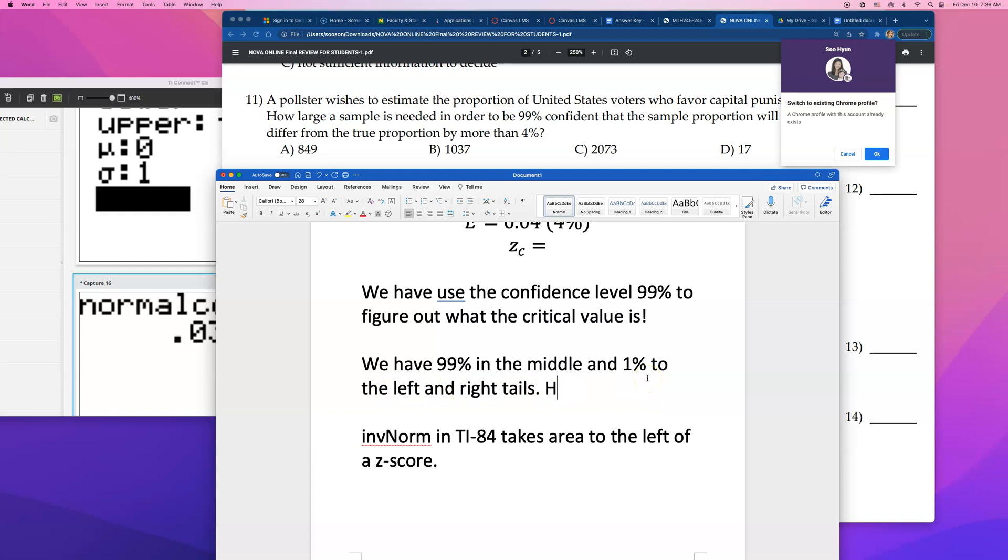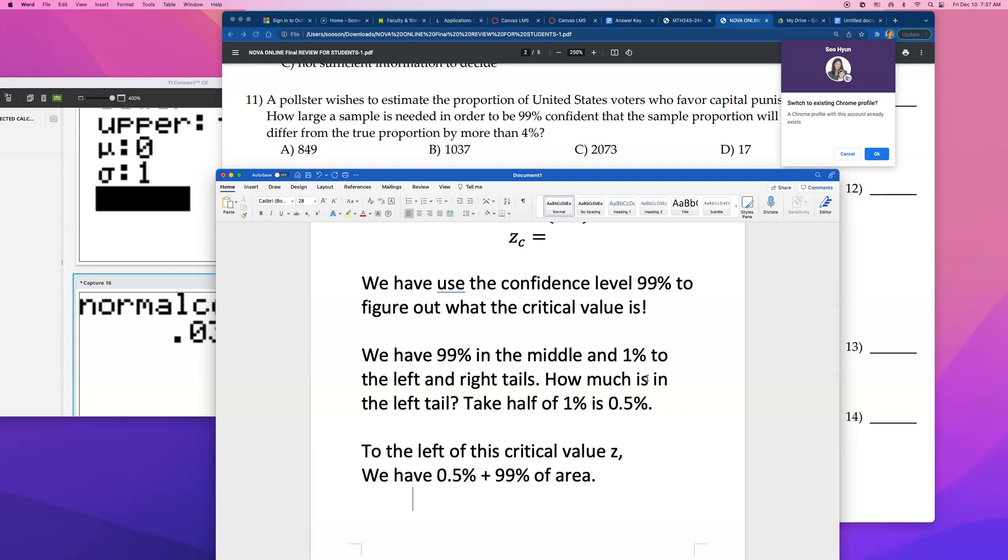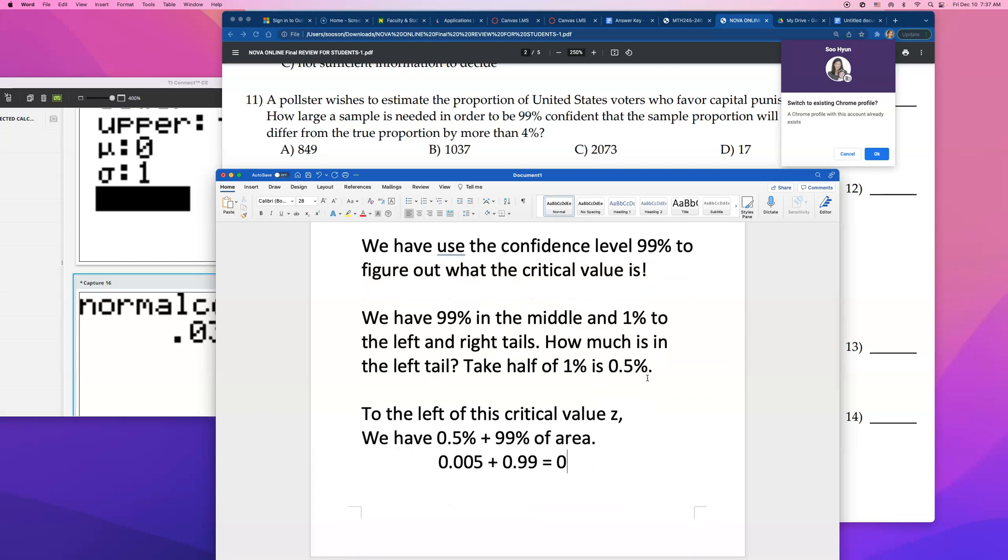Now, if you have 99% in the middle and 1% equally divided in the left and the right tail, how much is in the left tail? Remembering that in a normal distribution that is perfectly symmetric, all we have to do is take half of 1%, right? And half of 1% is 0.05%, right? 0.5%. So, what's happening is to the left of this critical value, Z, we have 0.5% plus 99% of area. Okay, now what's that in decimal?